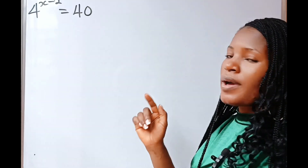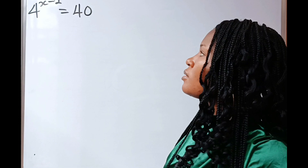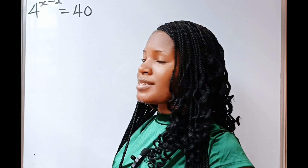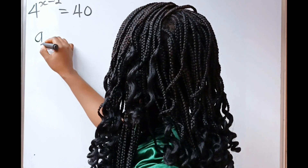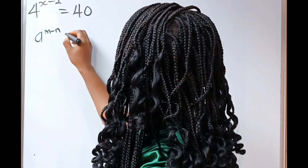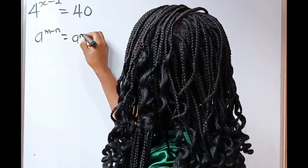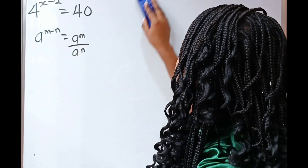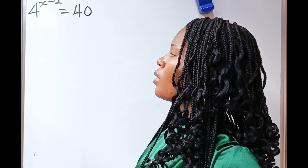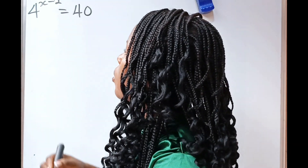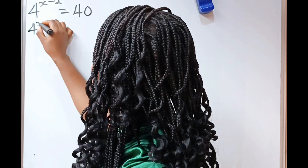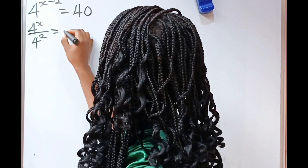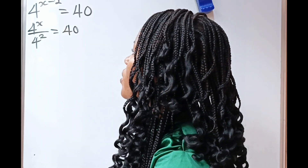Hi everyone, we are asked to solve for x. Now, I want you to note this law of indices or exponent that states that a to the power of m minus n is equal to a to the power of m divided by a to the power of n. So, using the division law, we can say that this is equal to 4 to the power of x divided by 4 to the power of 2 is equal to 40.